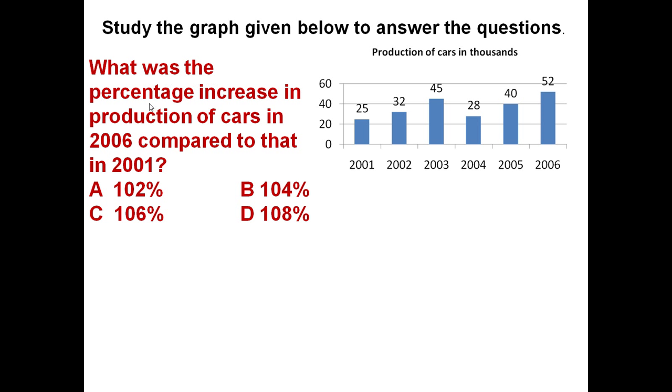What was the percentage increase in the production of cars in 2006 as compared to that in 2001? This is the production given in 2006, then this is the production given in 2001. So how much increase in production is there?